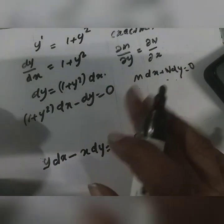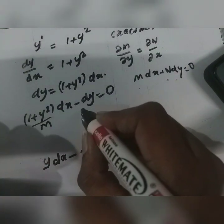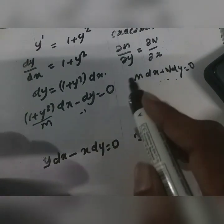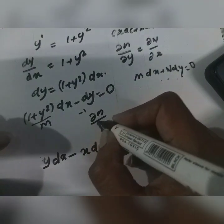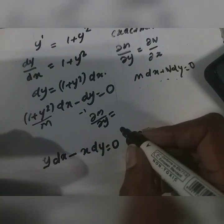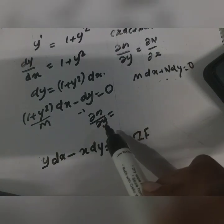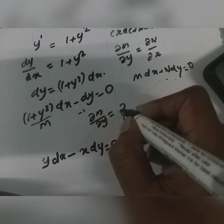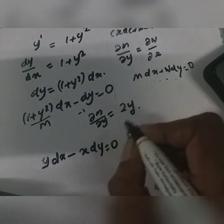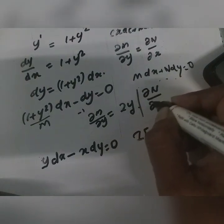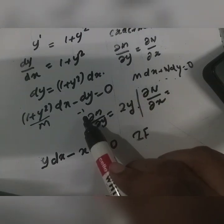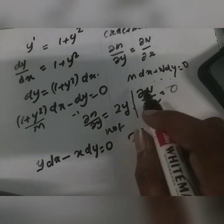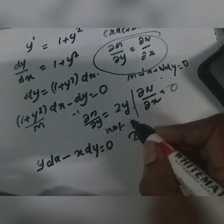Now we check the exactness condition. We compute do M by do y: taking partial derivative of 1 plus y squared with respect to y, treating x as constant, we get 2y. Then do N by do x: N is minus 1, which is constant, so the partial derivative is 0. Since 2y is not equal to 0, the equation is not exact.